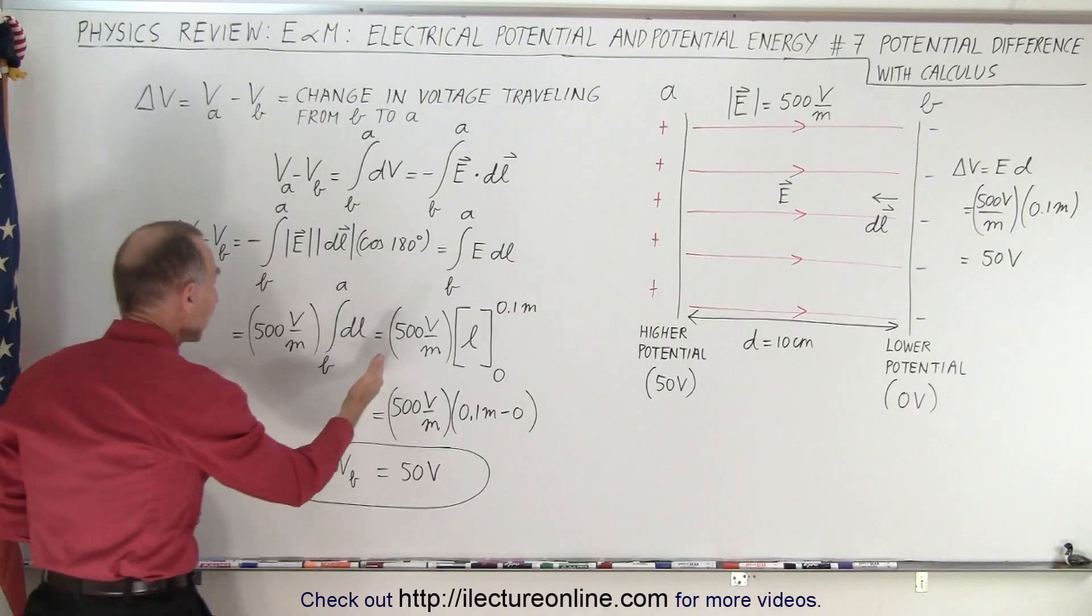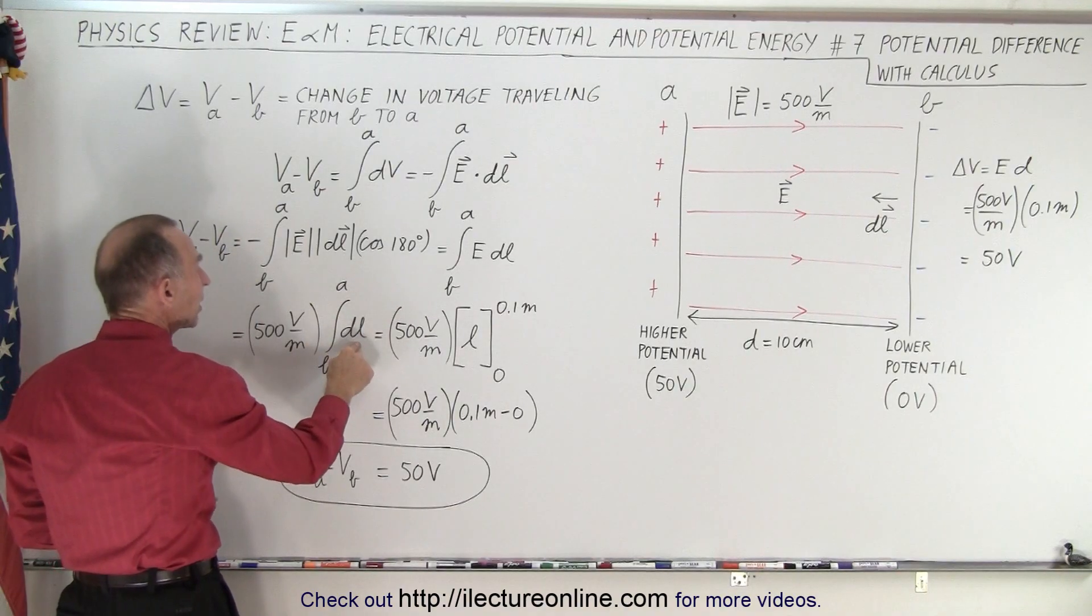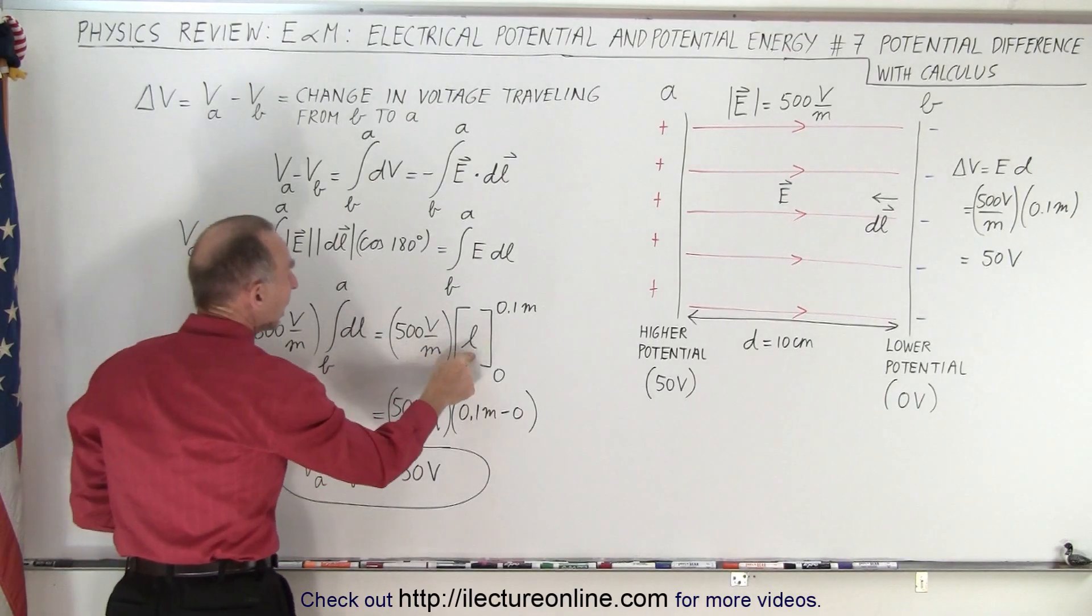Now since E is a constant, we can take that outside the integral sign, 500 volts per meter. And so we have the integral of DL from B to A. And the integral of DL is simply L.